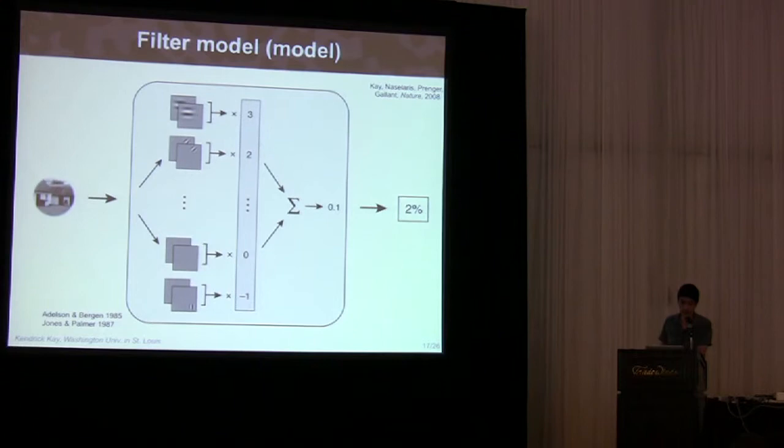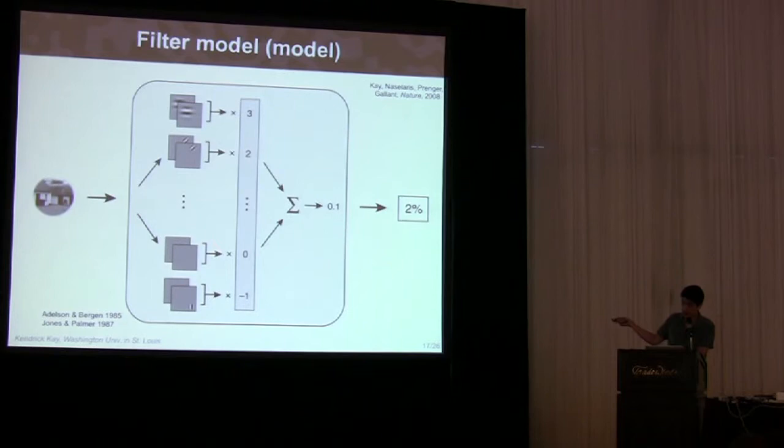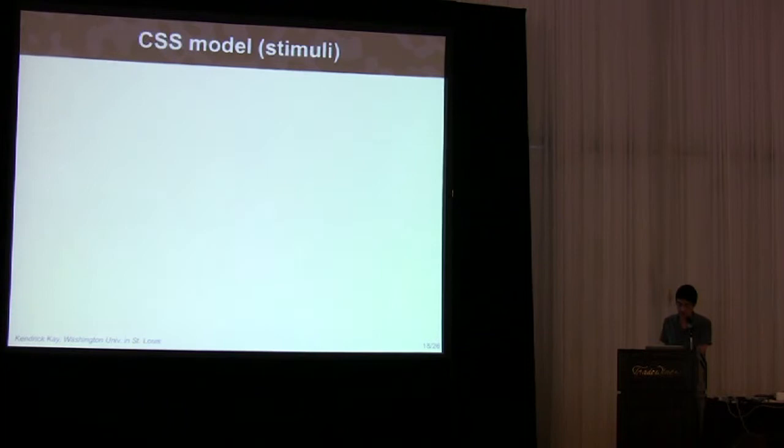Now, we found that this model works reasonably well in V1, and we actually did some decoding with it. But importantly, the performance of this model degrades in extrastriate areas. And so the question is, why?